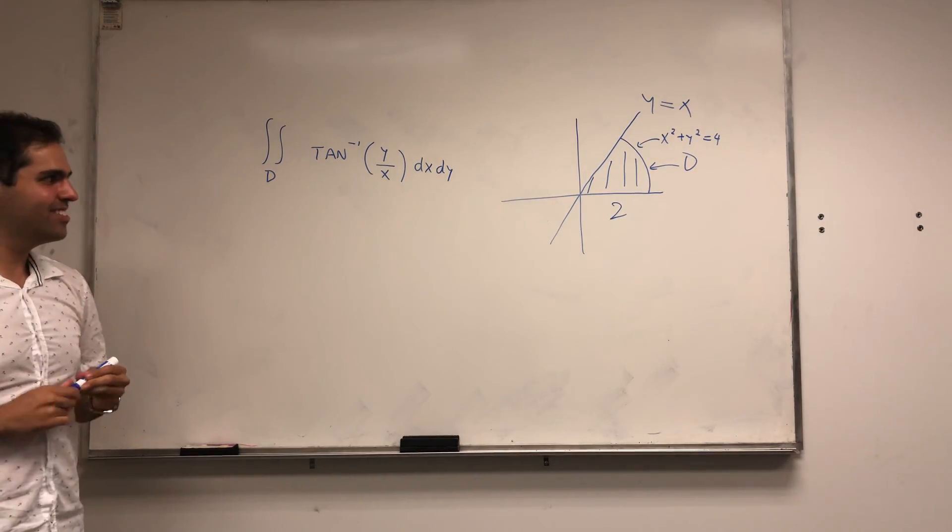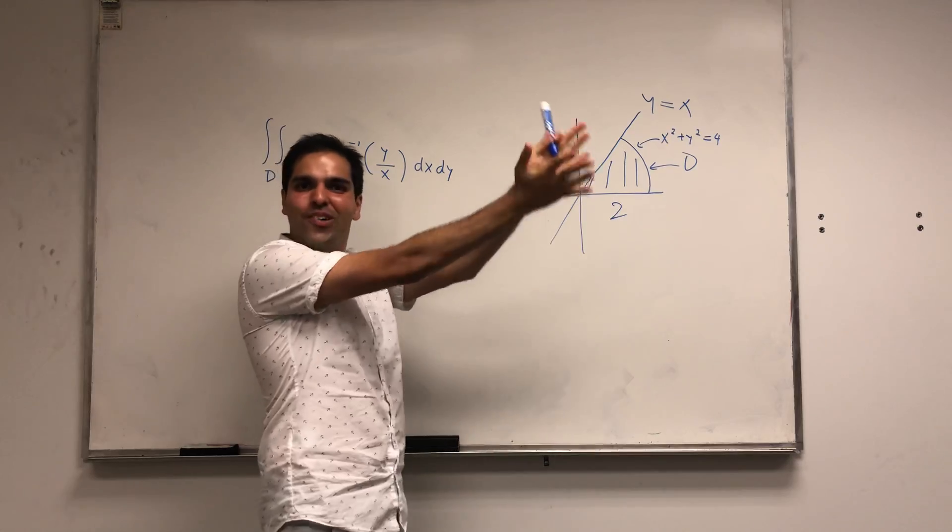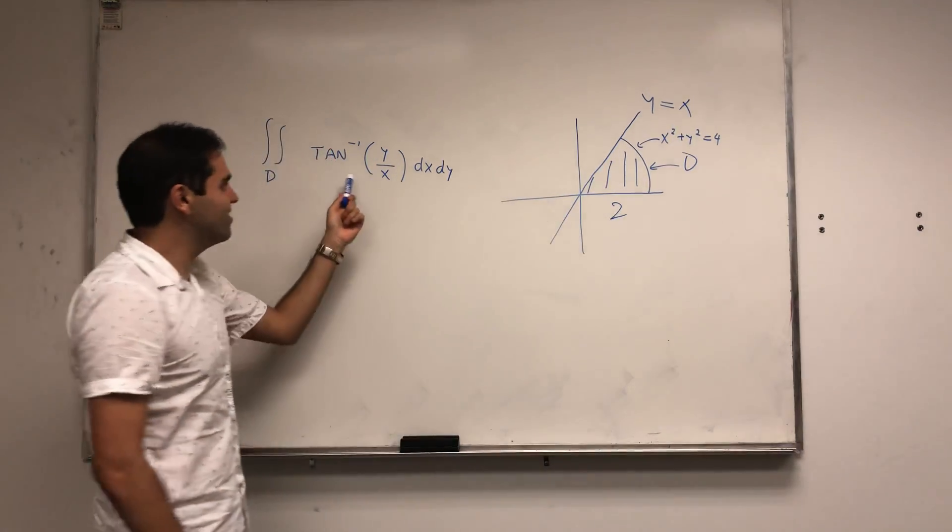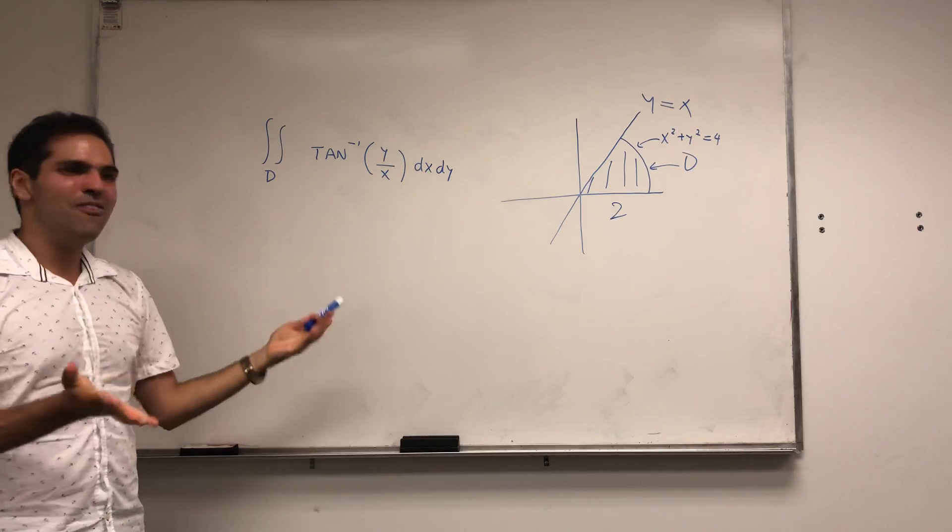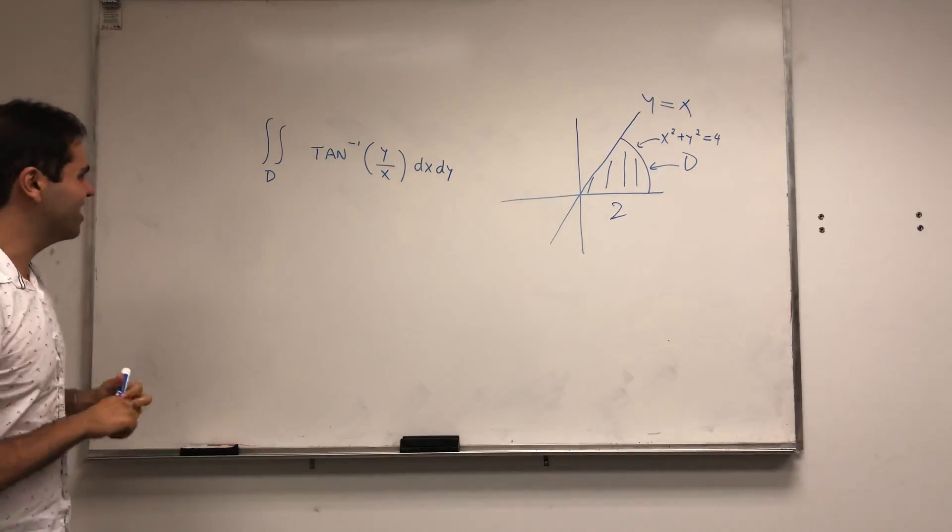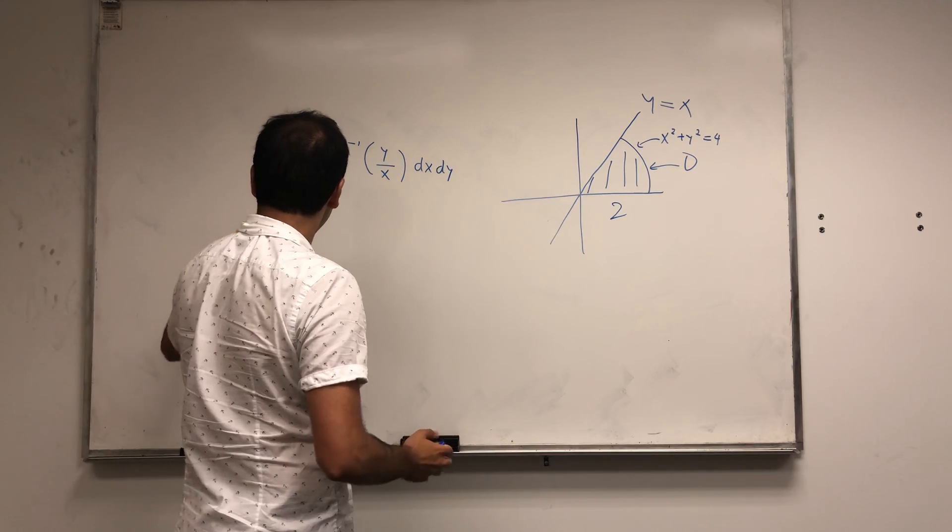Now because D is a circular thing, and turns out because you have arctangent of y over x, this is a perfect time to use polar coordinates.